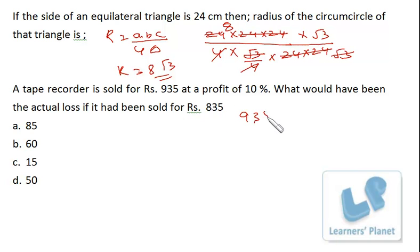935 divided by 1.1, so it is actually 85 into 11 by 1.1. So cost price is actually 850. This is selling price divided by profit data, that is 1.1. You will be getting the cost price, that is 850. So 850 is the cost price, 835 is the selling price, then 15 rupees loss will be there. So very simply you can do.